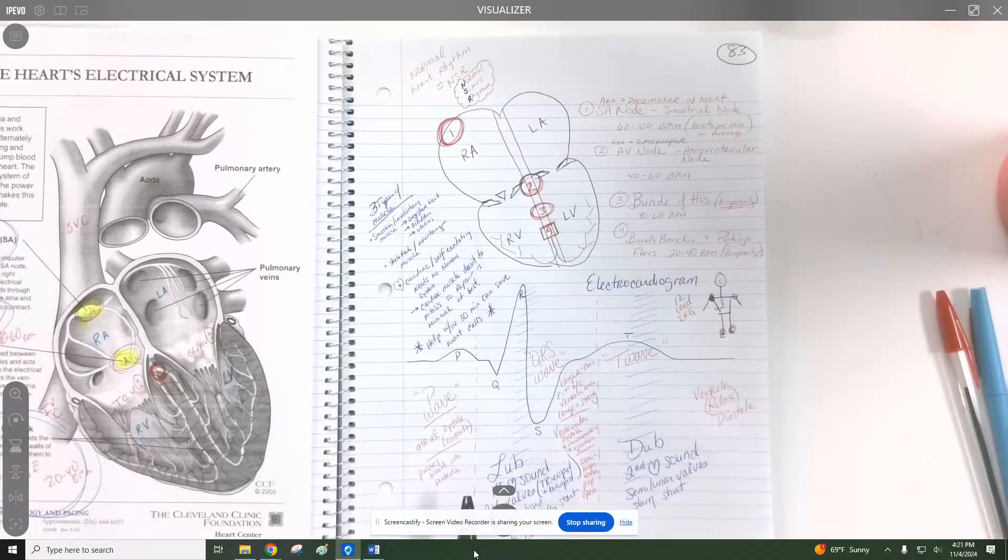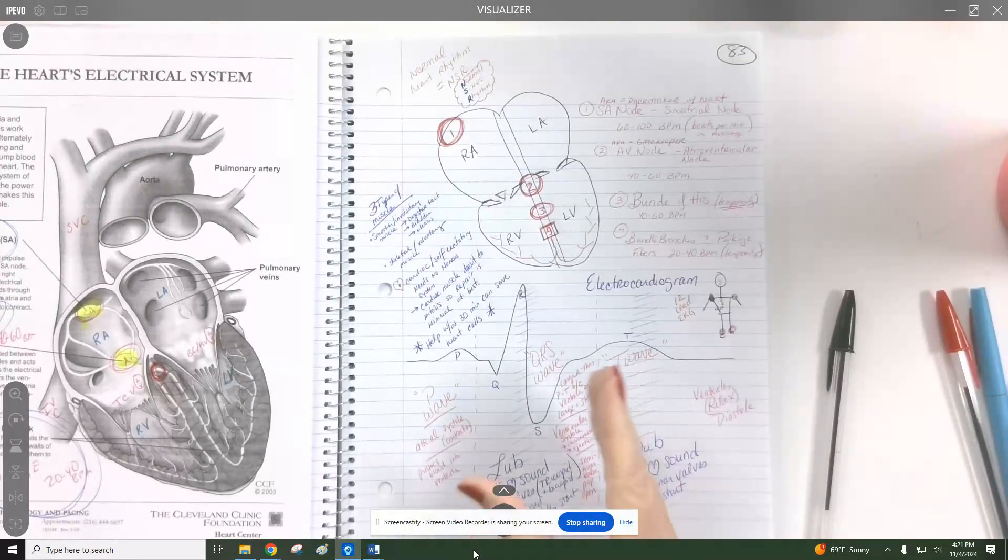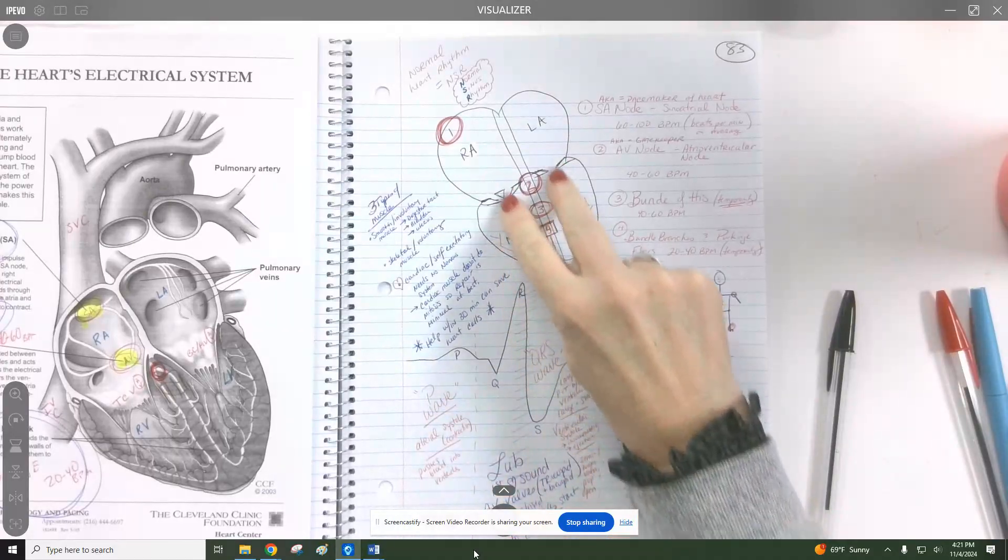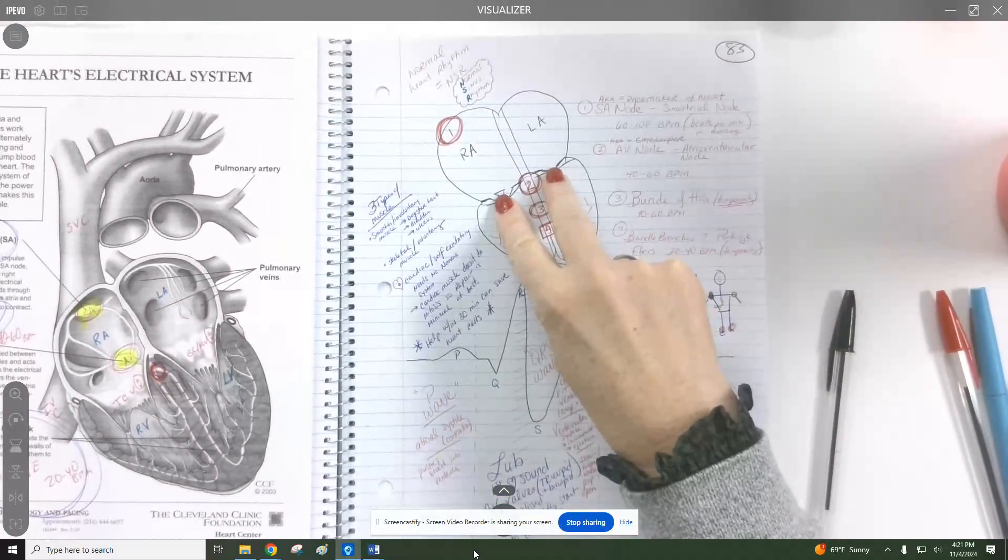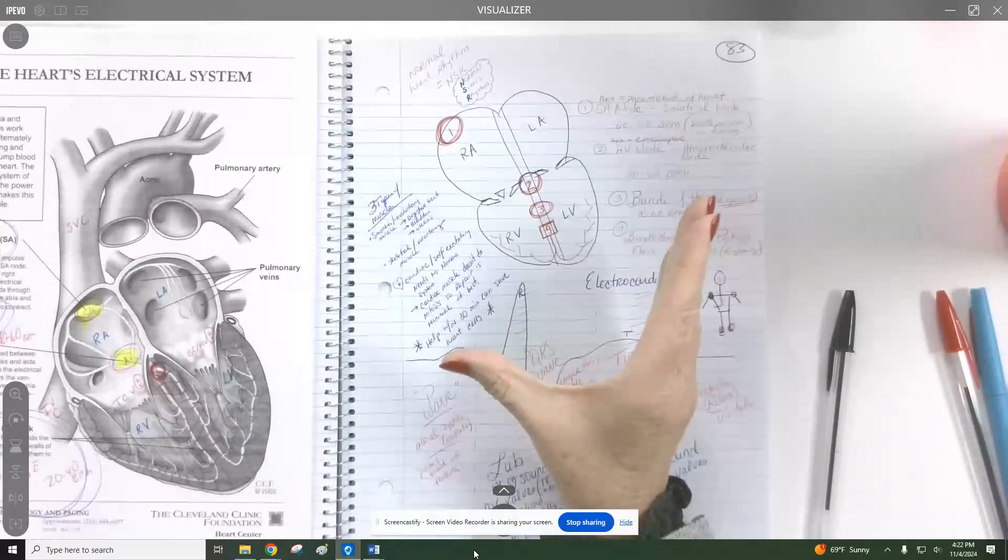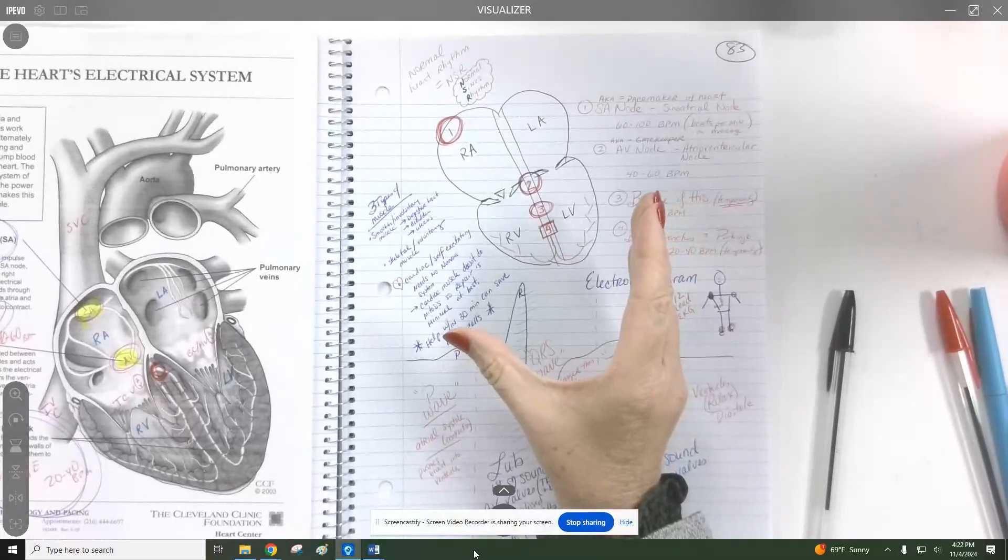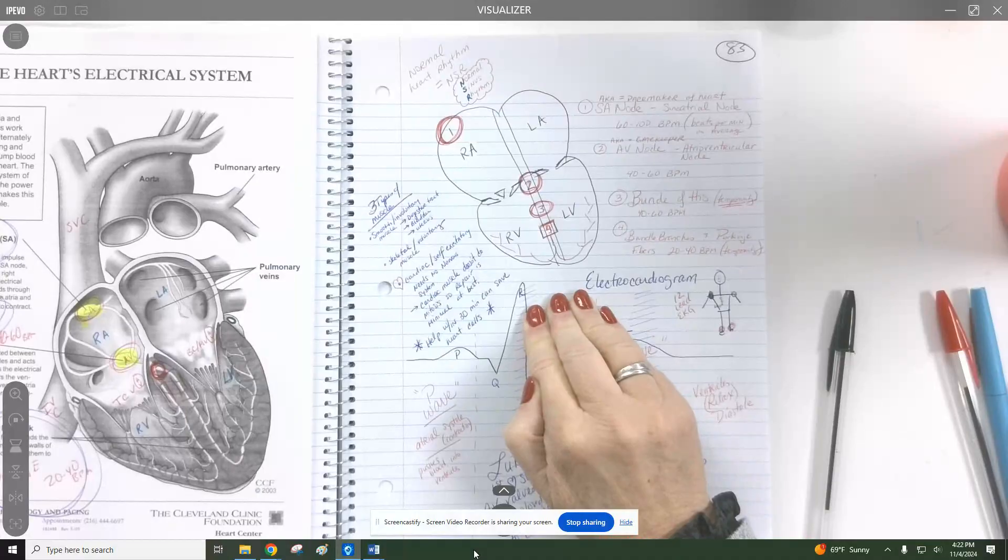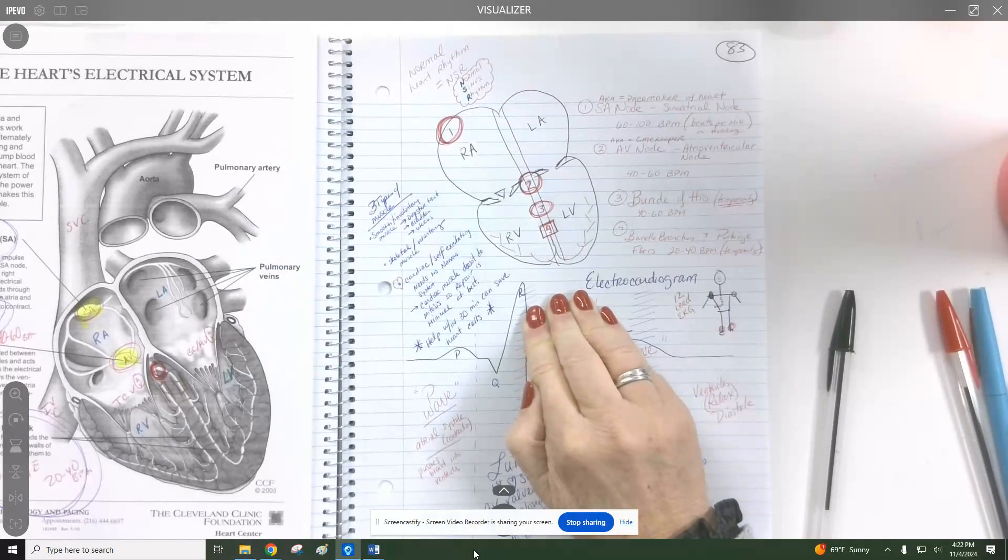Then here we have our ventricular contraction. And that comes in a couple of phases. When the ventricles start to contract, they actually contract a bit on the volume. And that slams the AV doors shut, making the first heart sound. But then they can continue to contract. And it's kind of like if I was pushing on the table. The table's not going to move until something gives way.